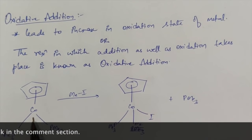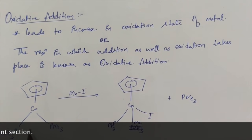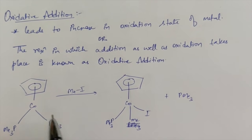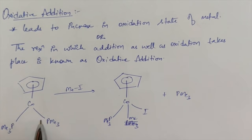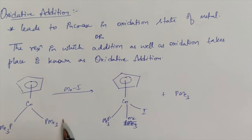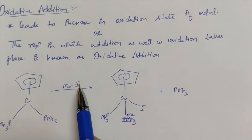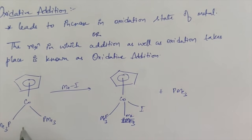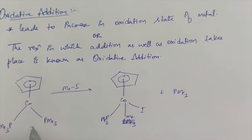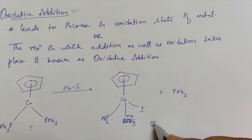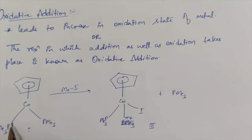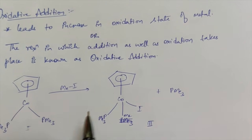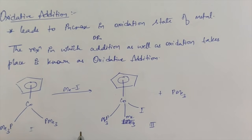In this example you can see cobalt is present with a plus one oxidation state. When it is treated with methyl iodide it shows a plus three oxidation state. So the oxidation state of cobalt has been increased from plus one to plus three. There is oxidation happening in cobalt as well as addition of this methyl and iodine into this particular complex. That's why this type of reaction is called an oxidative addition reaction.